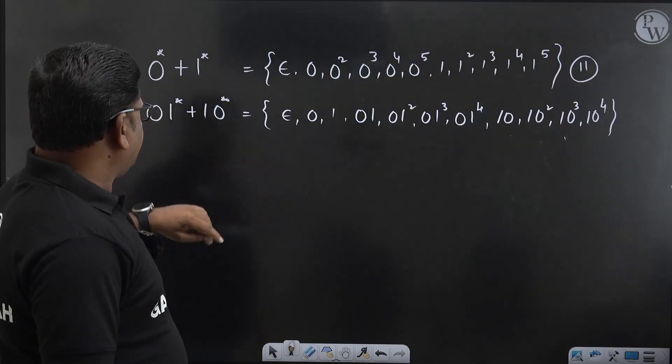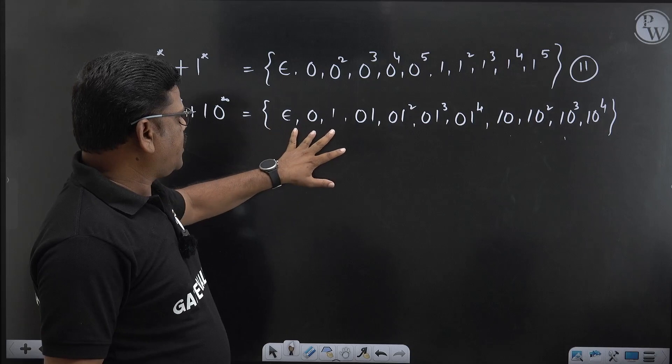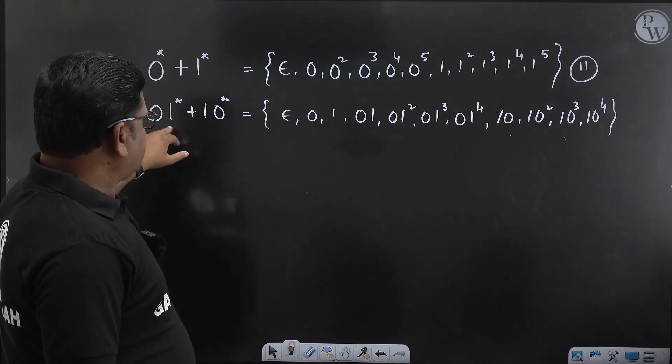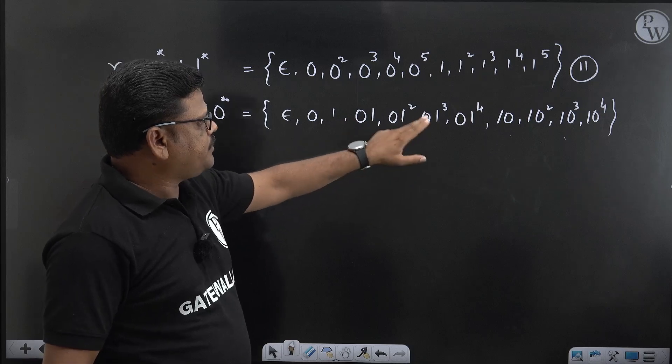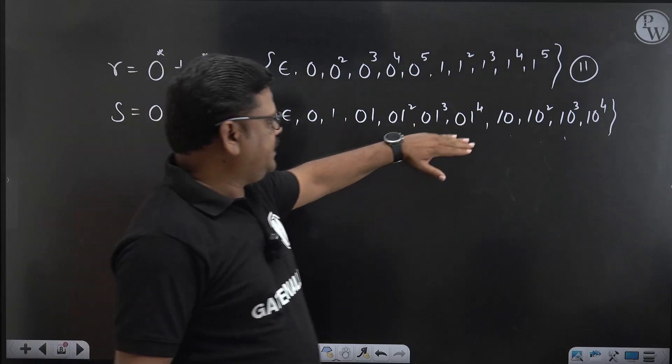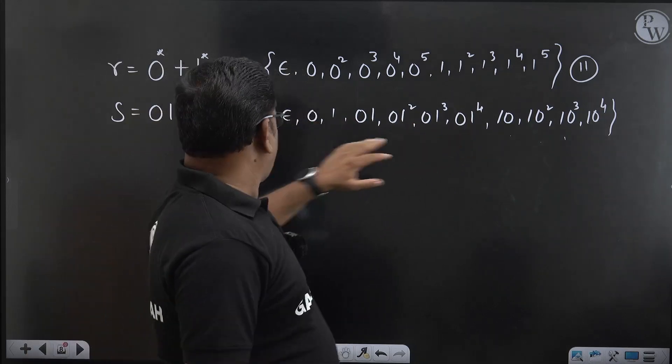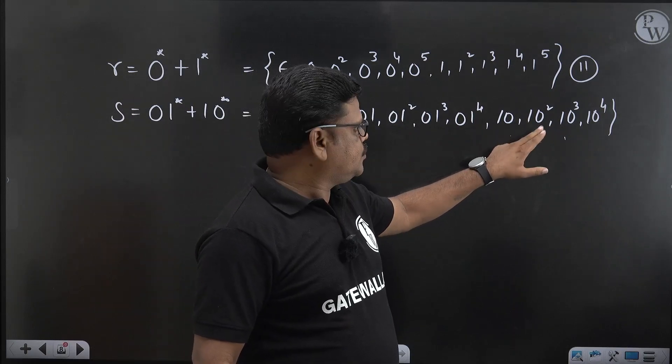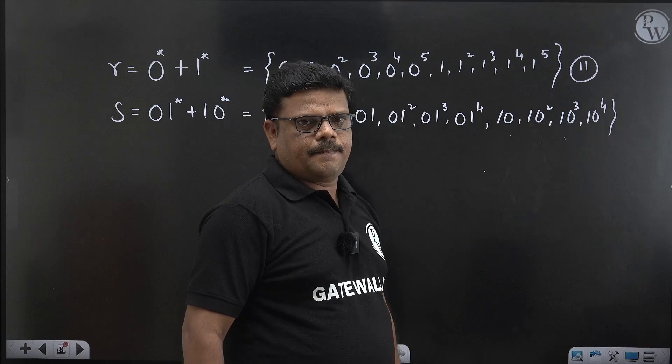From here if you generate epsilon, 1 length then if I expand 0 followed by 1* is there, 1 one time, 2 time, 3 time, 4 time. Length is up to 5. Then 1 0*, if I expand 1 zero, 1 two 0s, 1 three 0s, 1 four 0s like this.